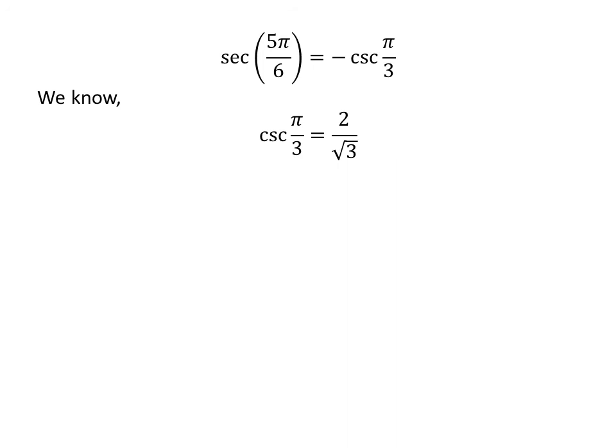We know cosecant of pi upon 3 is equal to 2 upon square root of 3. So secant of 5 times pi upon 6 is equal to minus 2 upon square root of 3.